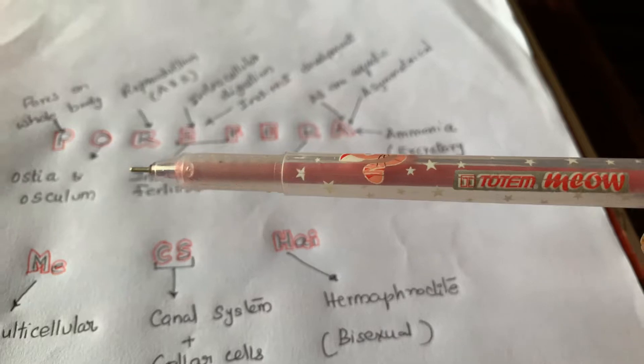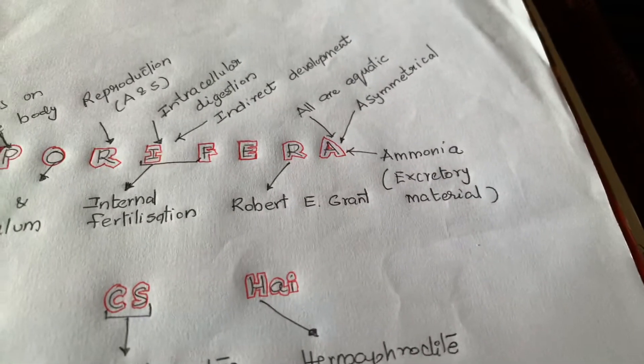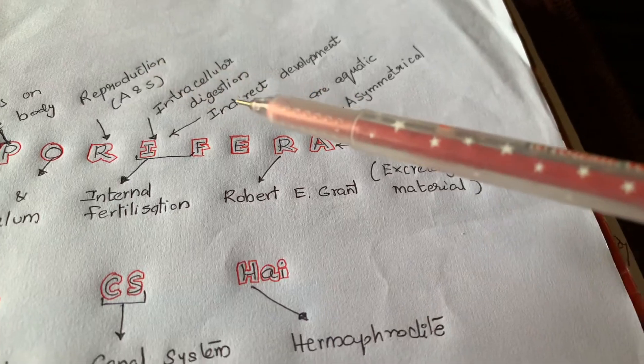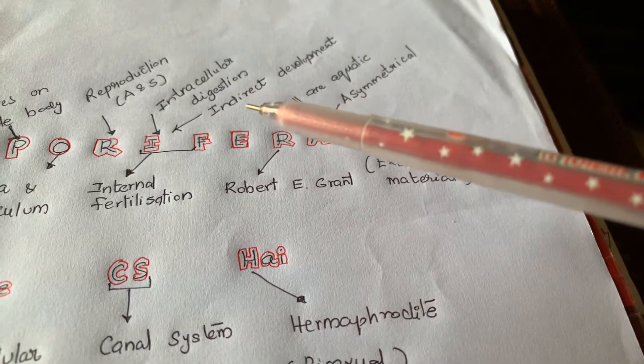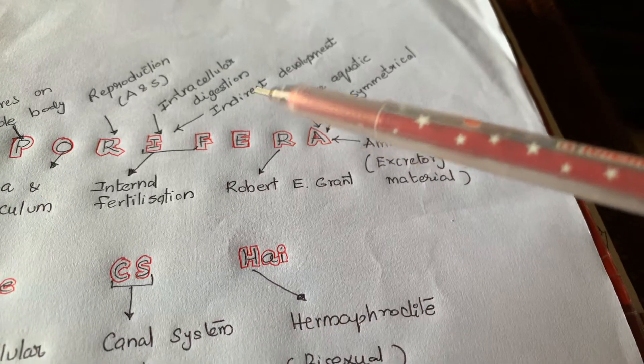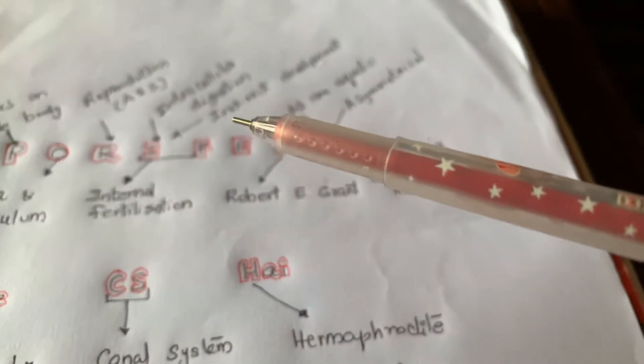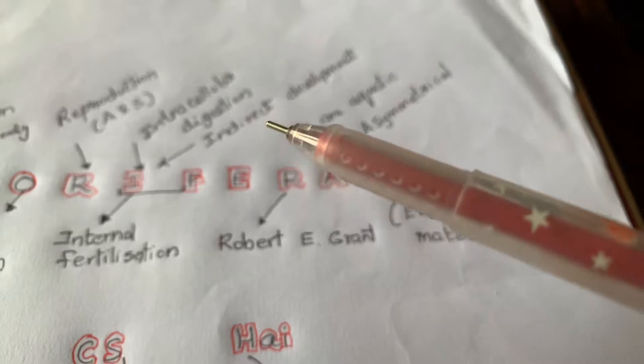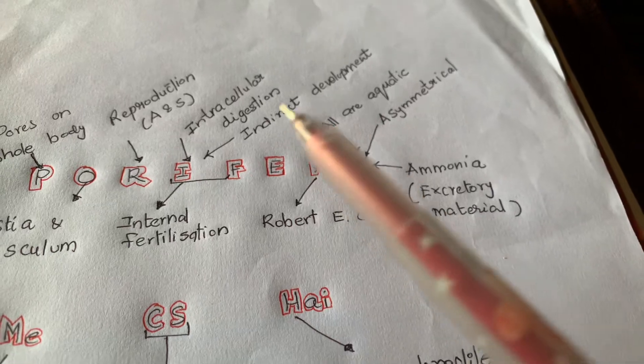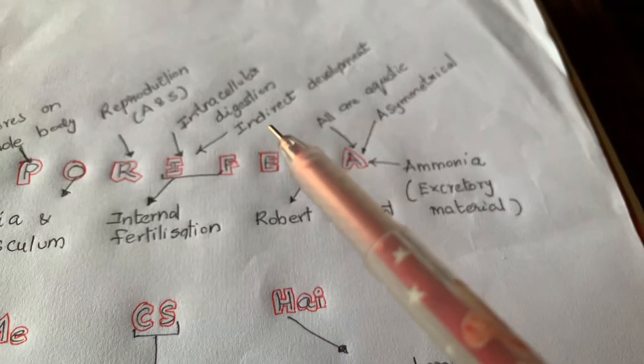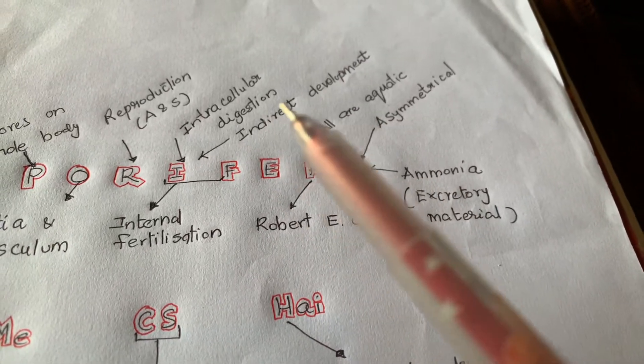And here, after fertilization, the development will occur indirectly. That means larval forms are present: Amphiblastula larva, Parenchymula larva, and also Coeloblastula larva and Trichimella larva. So larval stage is present, that is why the development is not direct, it is indirect.